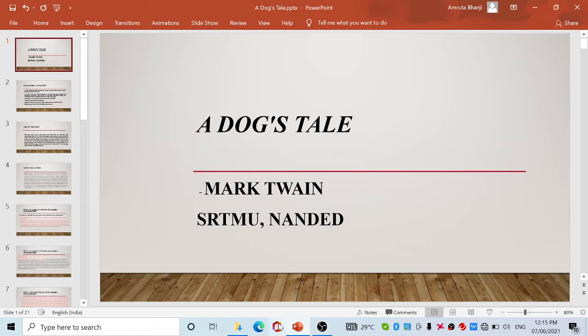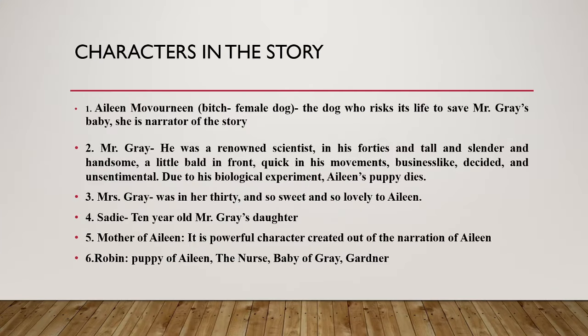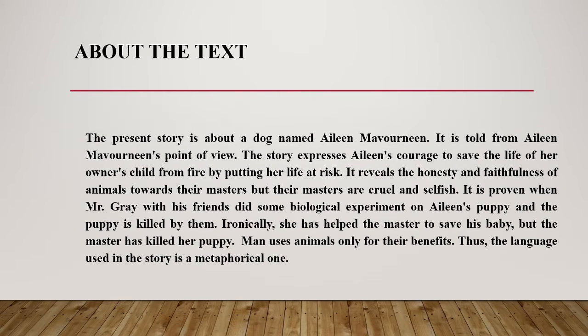Dog's Tale is a short story written by Mark Twain. The minor characters in the story are Aileen's mother, Robin the puppy of Aileen, the nurse, and the baby of Grey and the gardener.